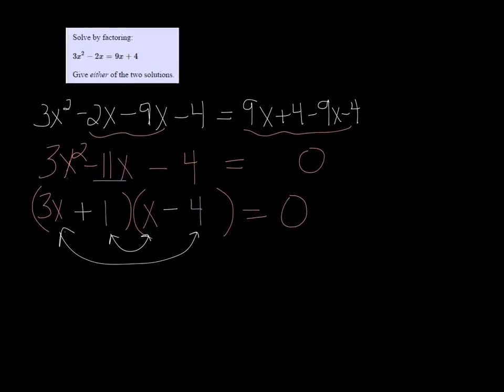All right, from here, we use the zero factor property that says if two things multiply to be zero, then one or both of them must be zero. So 3x plus 1 equals 0, or x minus 4 equals 0, or both.